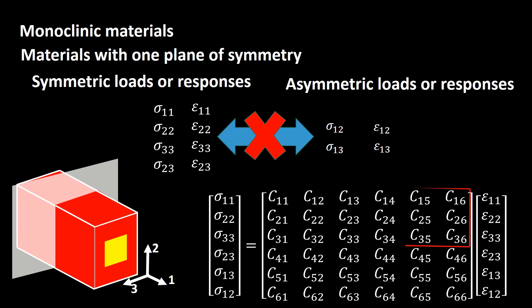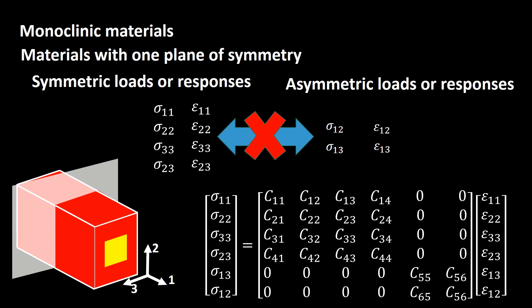Six components that relate normal stresses as symmetric loads to asymmetric shear strains are therefore zero, and two components relating symmetric shear stress to asymmetric shear strains are zero as well — eight components in total are zero. Since the stiffness matrix is symmetric, eight more components are replaced with zero. Finally, to analyze a monoclinic material we need 13 constants.